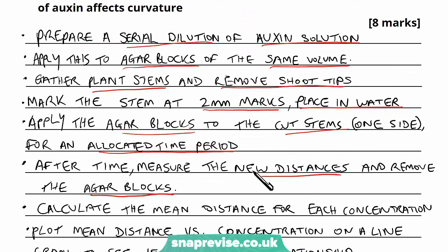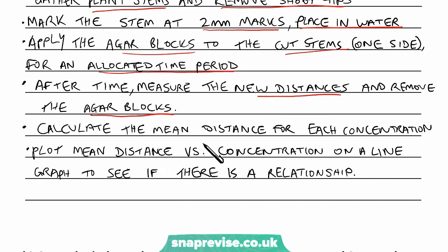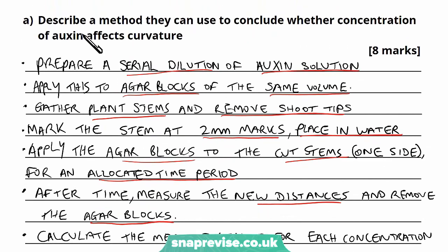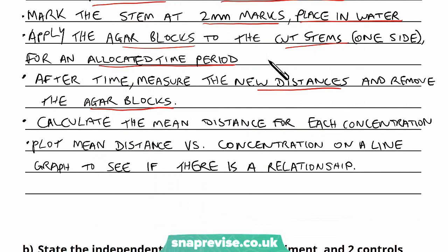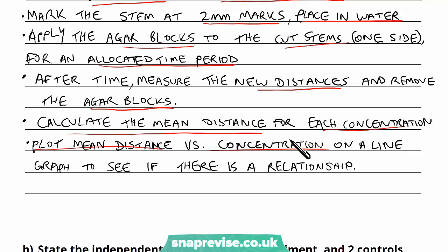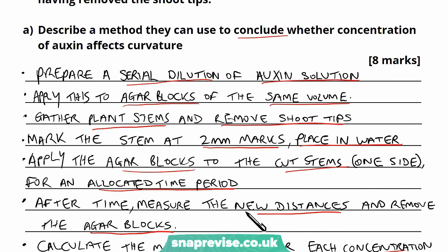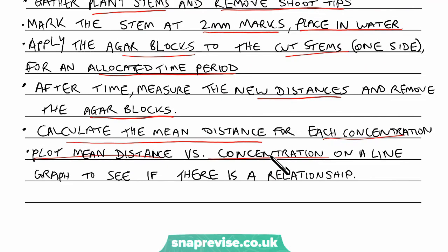You can already see a logical order here: preparing everything, then actually measuring for the time allocated. The method doesn't just say describe the method — it says describe the method to conclude whether concentration affects curvature. So once they've got all the distances, calculate the mean distance for each concentration, and then plot the mean distance against a graph. This is a way of comparing the distances against the auxin concentration to show that a relationship exists. That's the best way to tackle a method question: think logically about setup, materials, measurement, and then how to use that measurement to answer the question.